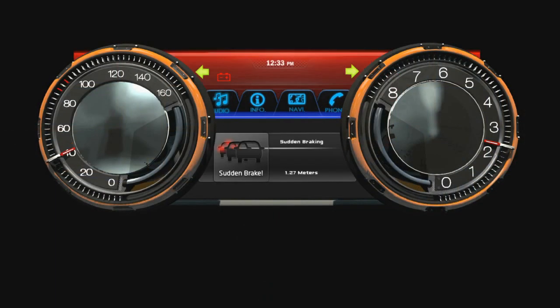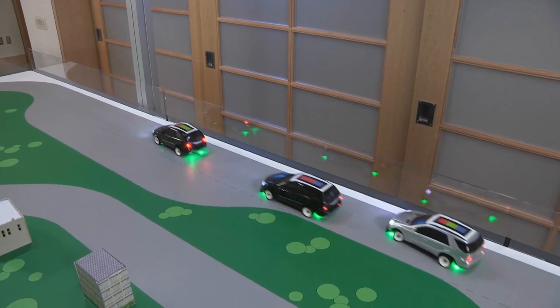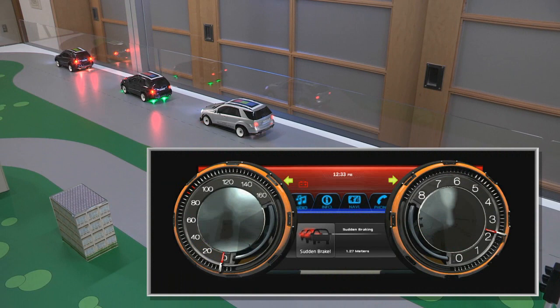This V2X module communicates that there is a hard braking event up ahead and allows us to begin braking before a dangerous situation arises. Using our track to replicate this scenario, the lead vehicle has slammed on its brakes. By having an electronic brake light warning, we can begin braking even before the vehicles ahead of us.